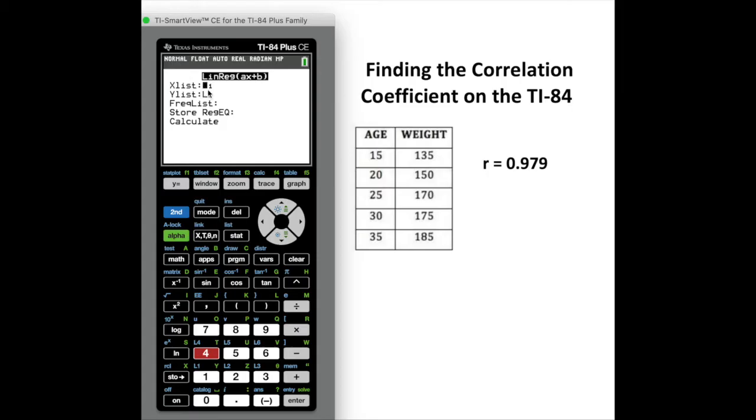Your X list is in L1, which should automatically come up. If not, you could change that. Your Y is in L2. We don't need to worry about the frequency list, and unless you want to store the equation, you do not have to put anything there.